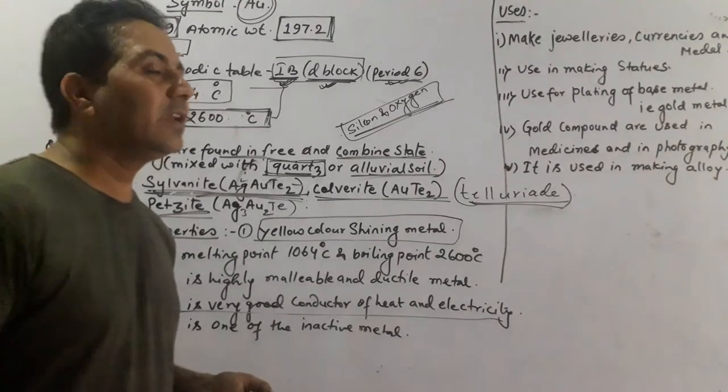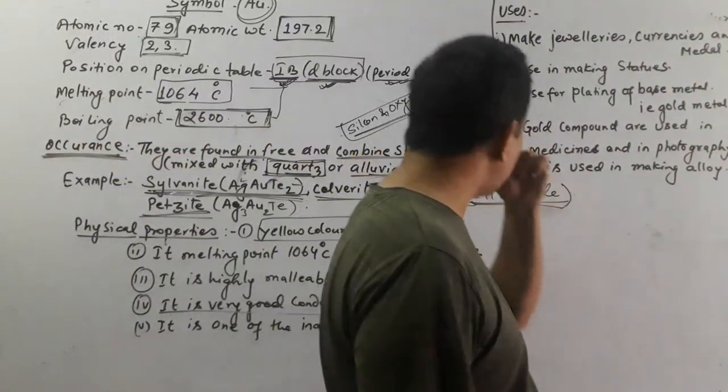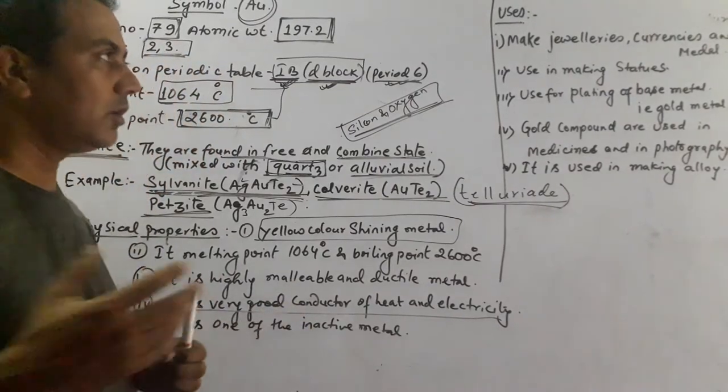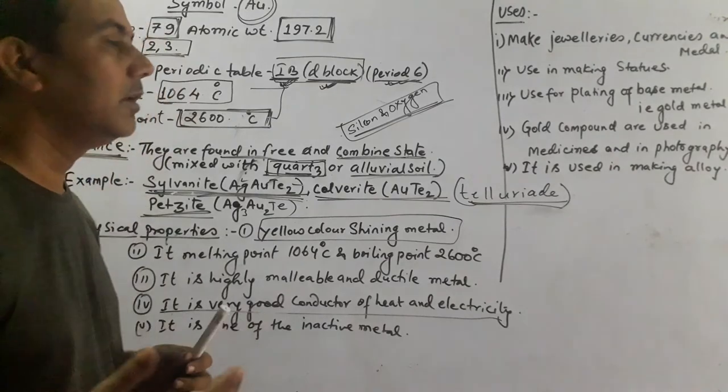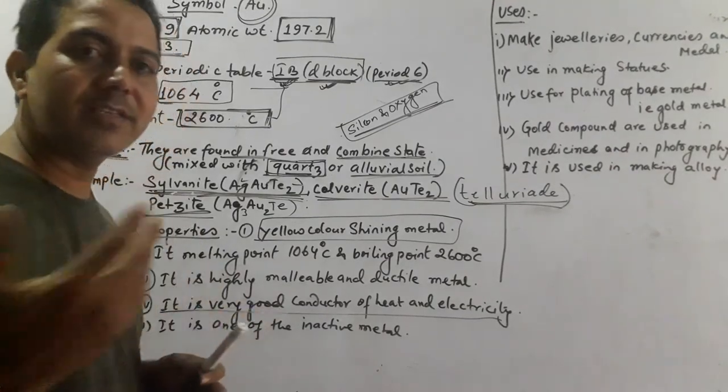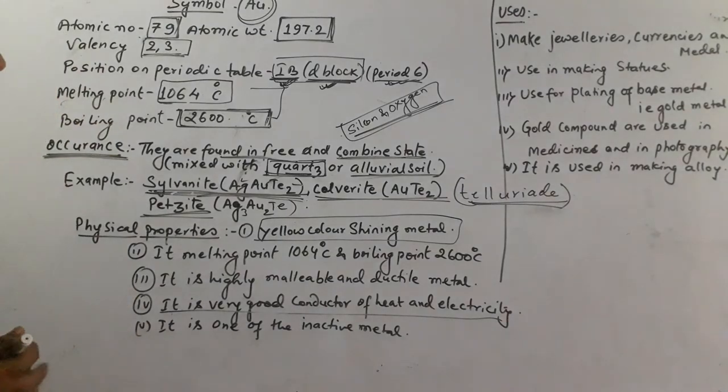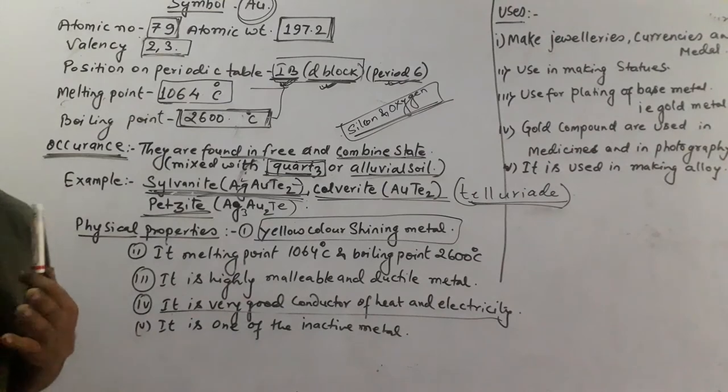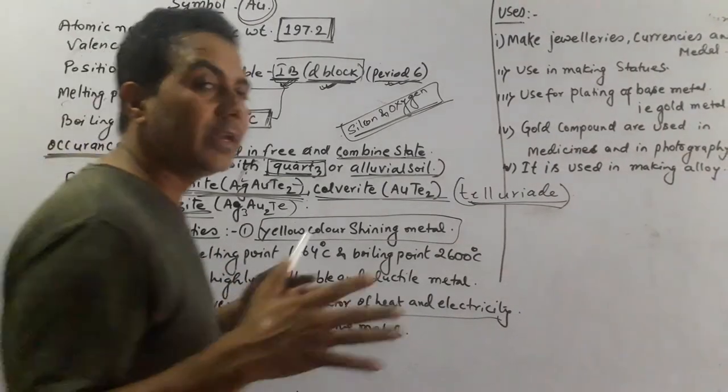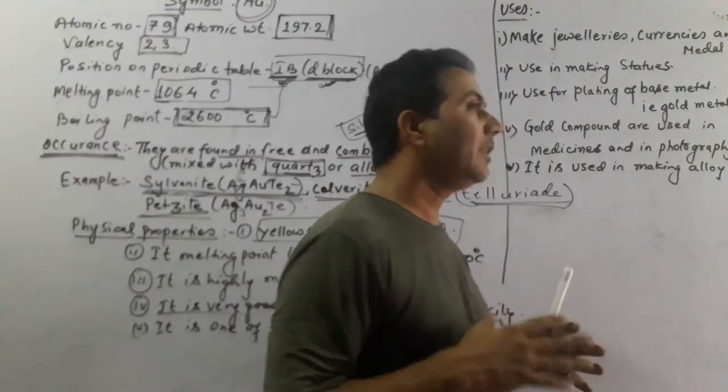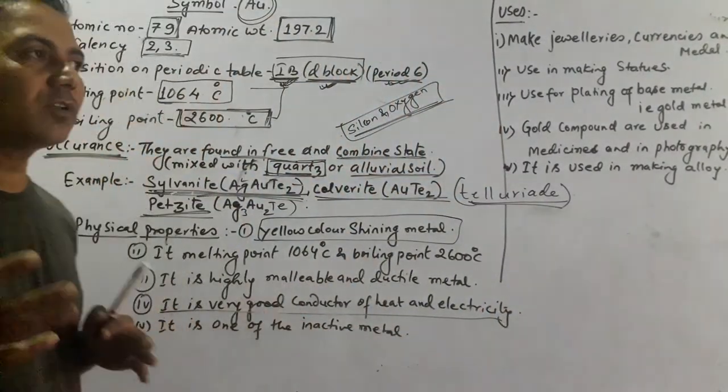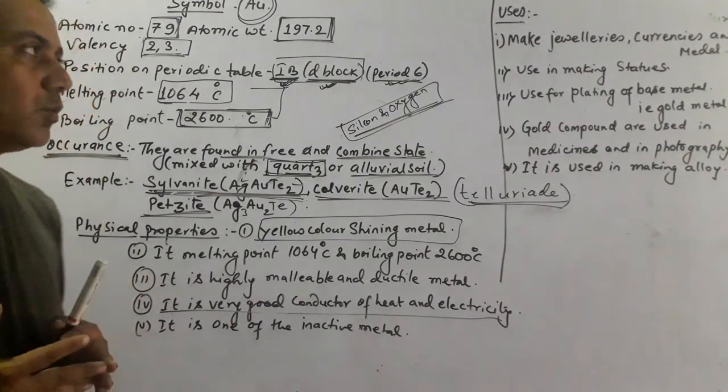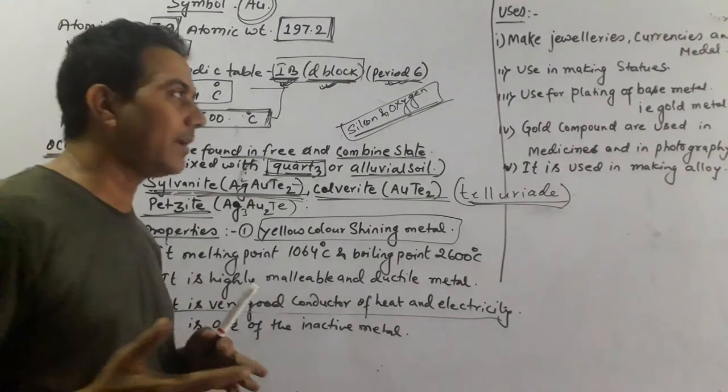Now comes the uses of gold. Gold is mostly used in Nepal for making jewelry and madden. It is used for making statues. Most of the statues of gods and goddesses are made of gold. It is used in plating base of gold, like gold plating. Some metals are plated with gold.